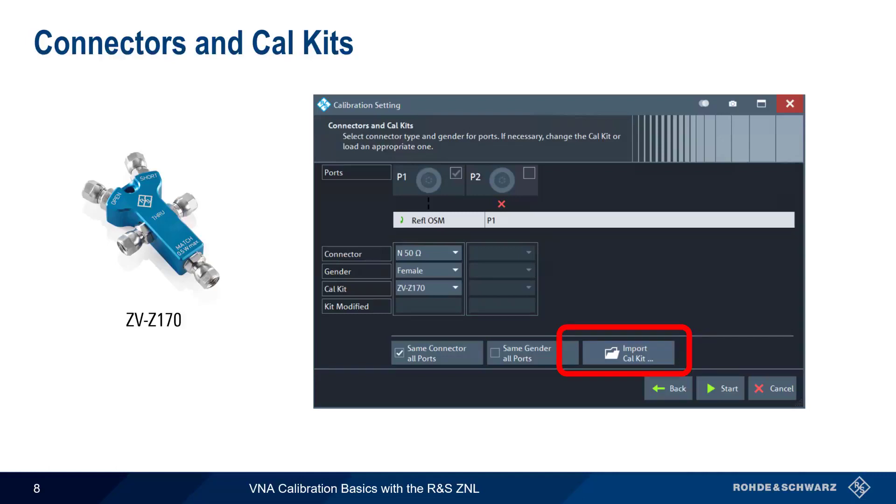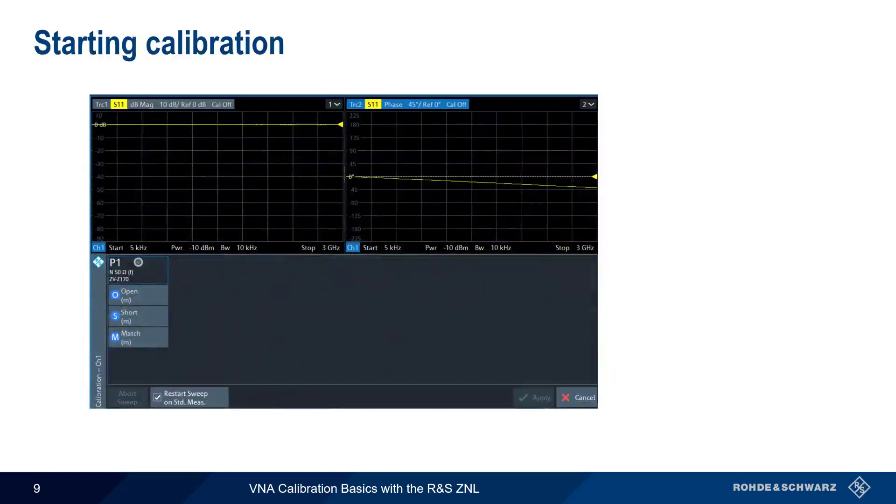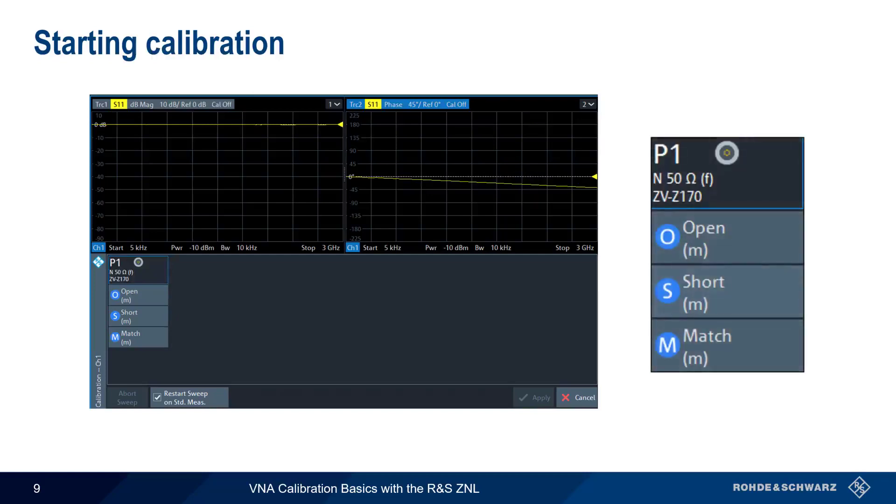To begin the calibration process, we now select Start. In the calibration screen, we see the three steps that will be needed for our full calibration of port 1, namely open, short, and match. For each of these steps, we'll connect the appropriate calibration standard to the port, and then click on the corresponding calibration step.